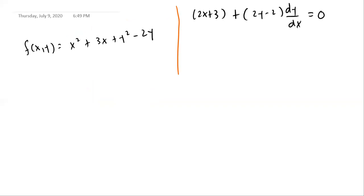Look at the function f(x, y) = x² + 3x + y² − 2y on the left and the differential equation on the right — these two are related, though it's not exactly obvious how. Let's find the partial derivative of f with respect to x: treat x as the variable and y as a constant. The derivative of x² is 2x, derivative of 3x is 3, and y² − 2y is constant so it contributes 0. So ∂f/∂x equals 2x + 3, which is precisely the first term of the differential equation.